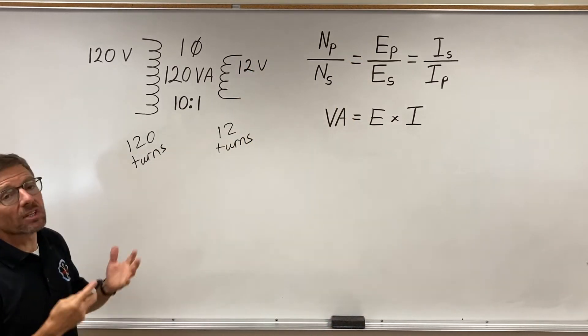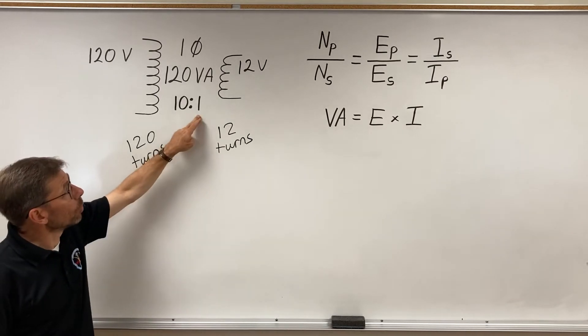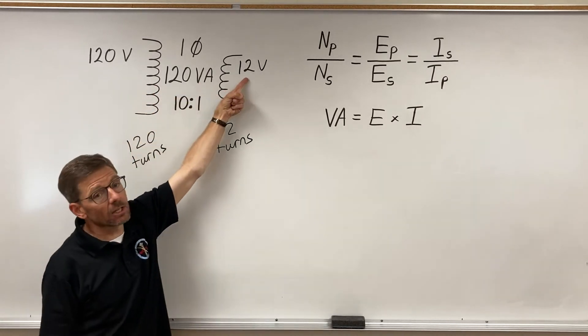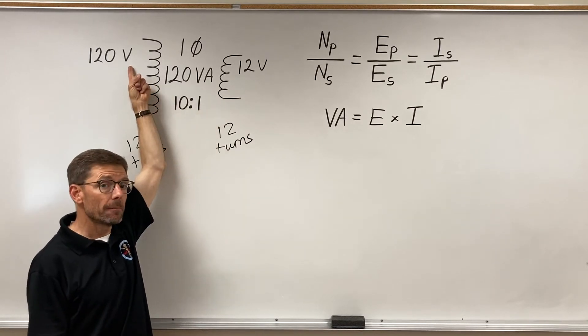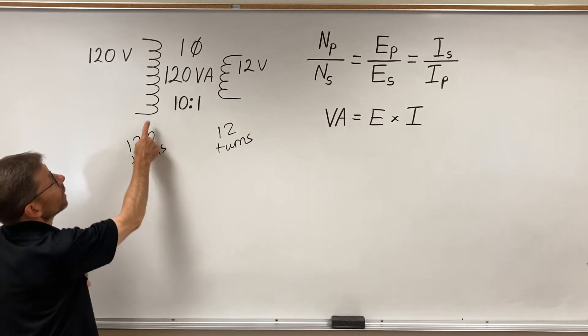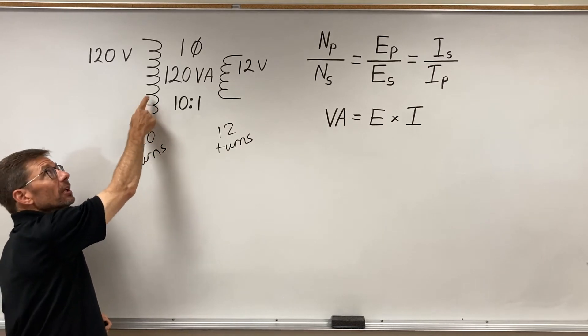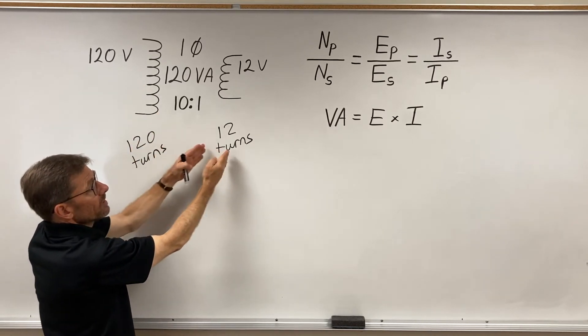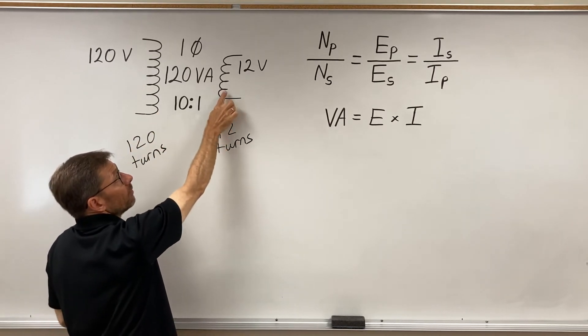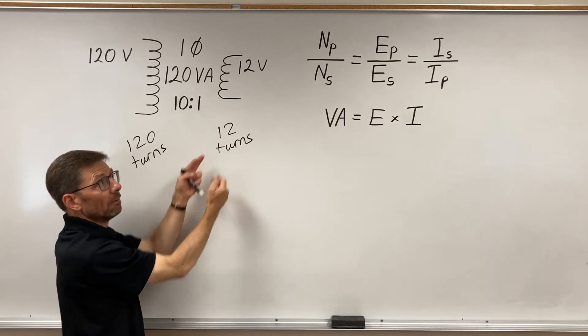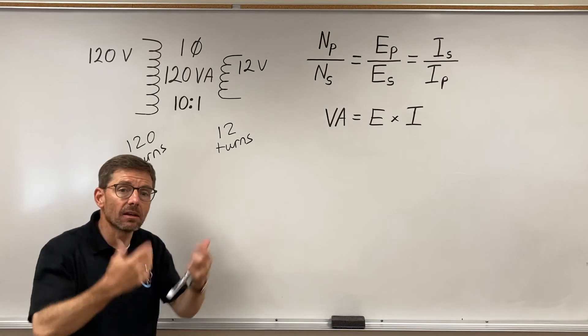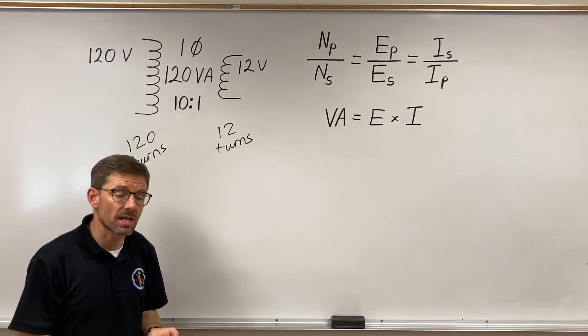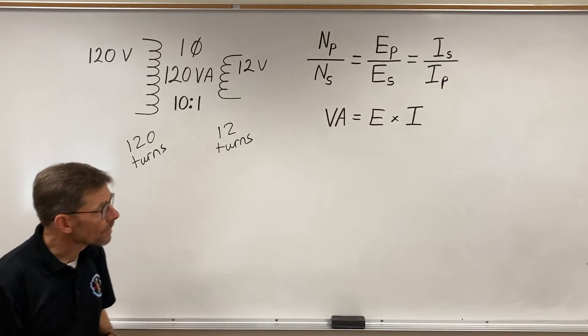So, whether you want to simply use the ratio 10 to 1 and realize that your secondary voltage is one-tenth of your primary, or whether you want to say one volt per turn, there's one-tenth as many turns, one volt per turn, adds up to 12 volts. Either way, whichever way helps you think through the calculation process, 12 volts.